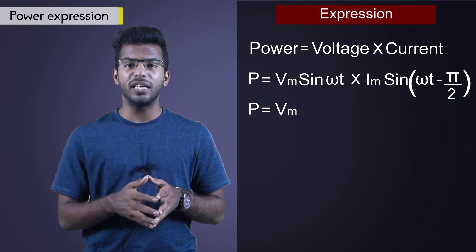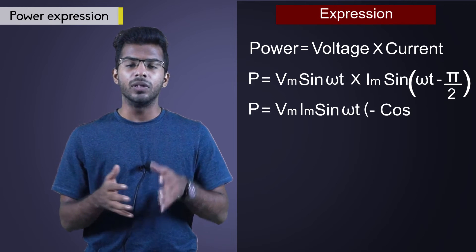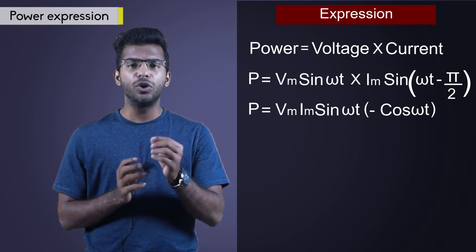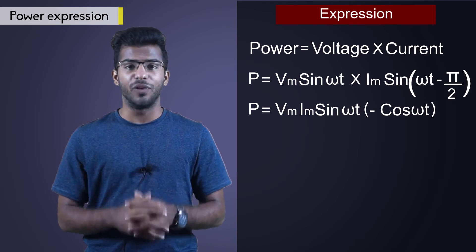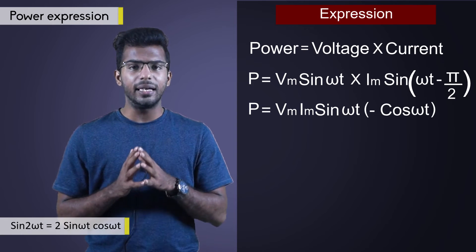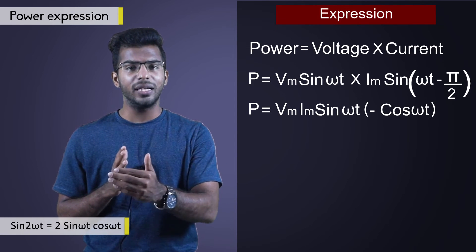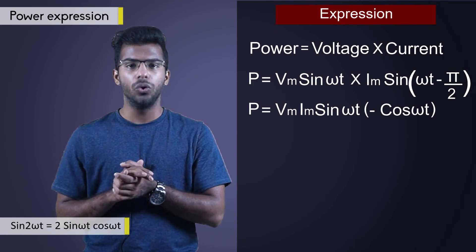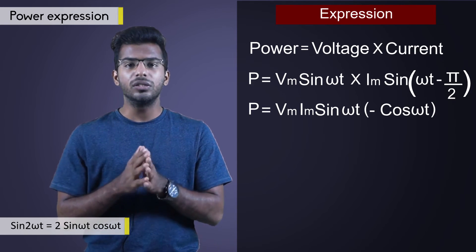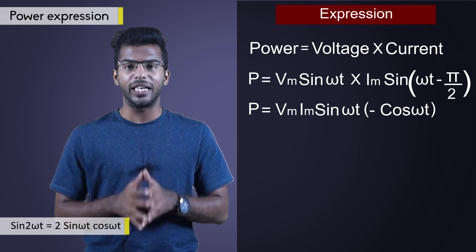So, it is P is equal to Vm Im sin omega t cos omega t. Again, the trigonometric formula comes in very handy. We have the formula sin 2 omega t as 2 sin omega t cos omega t. So, sin omega t cos omega t is equal to sin 2 omega t divided by 2.